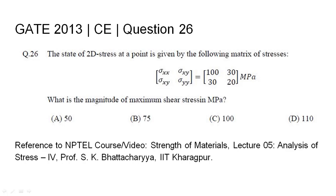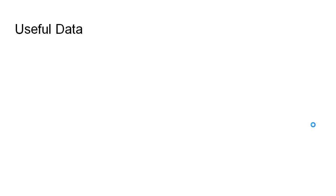GATE 2013 civil engineering question 26: the state of 2D stress at a point is given by the following matrix of stresses. What is the magnitude of maximum shear stress in mega Pascal? The four options given are A: 50, B: 75, C: 100, and D: 110.